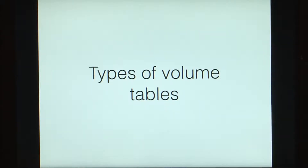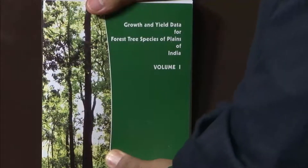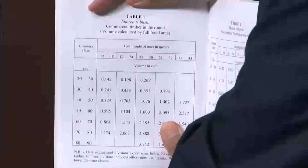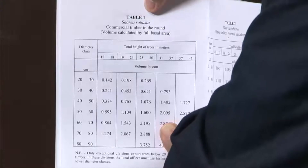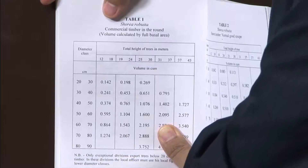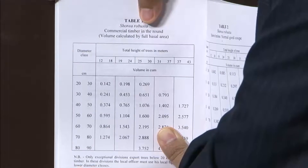Essentially, we can have different kinds of volume tables. There is a book that gives us the growth and yield data for forestry species of the plains of India, colloquially called the volume table book or yield table book. Looking at one particular species — Shorea robusta, which is sal — there is a table giving us the commercial timber in the round, with volume calculated by full basal area.